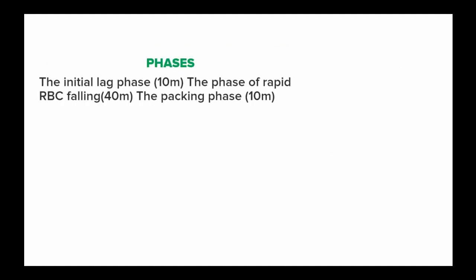When carrying out the ESR test, the blood sample undergoes distinct phases. The first 10 minutes is known as the initial lag phase; the phase of rapid red blood cell falling occurs within the next 40 minutes; and the packing phase occurs in the last 10 minutes. All this accounts for the one hour of conducting the test.